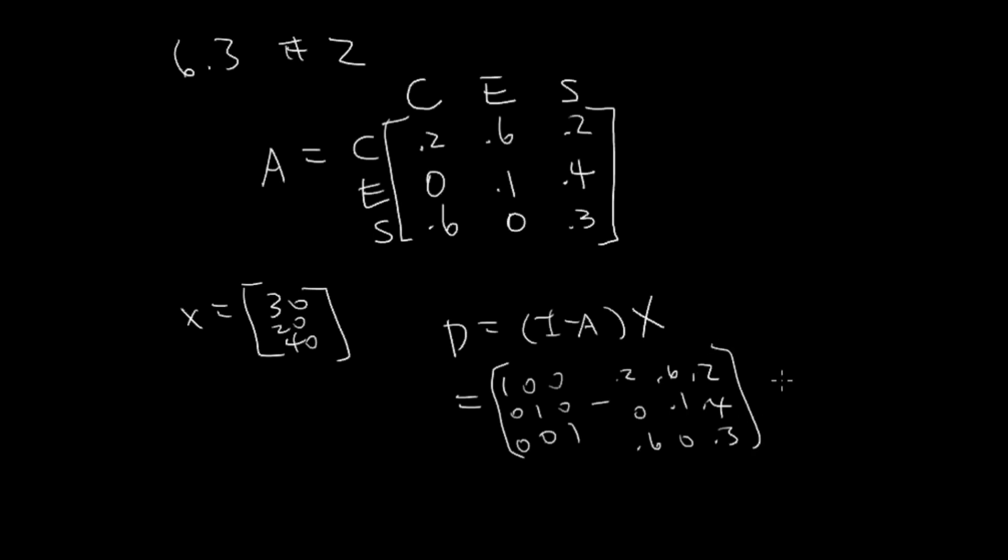And then we're going to take that. Here we have 0.8, negative 0.6. Here we have negative 0.6, negative 0.2, 0.9, negative 0.4, negative 0.6, 0.7.